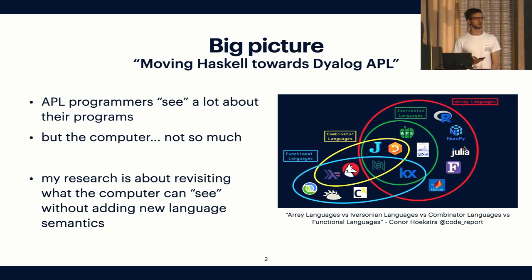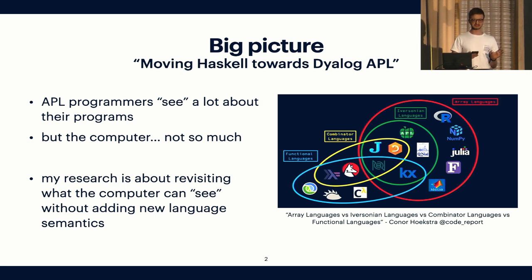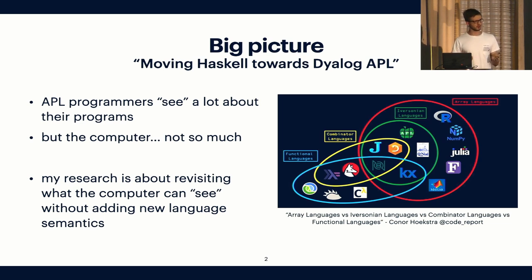The big picture — to get an idea where I'm coming from — is that I'm more from the functional programming end of things. In that picture you might see Haskell in the combinator languages. What I'm really trying to do is take some ideas from Haskell and similar languages and push it towards the Iversonian languages. It's often said that APL programmers, when they write APL, they see a lot about their program — how it works with a matrix or a vector. But for the computer it's not really as easy, and that's what my research is about: revisiting what the computer can really understand, or whether it could see the same things as the APL programmer does.